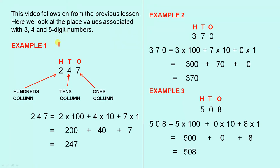Let's look at the first example. This is the ones column, the tens column, and the hundreds column. So we've got 2, 4, 7. So 247 will be 2 times a hundred,